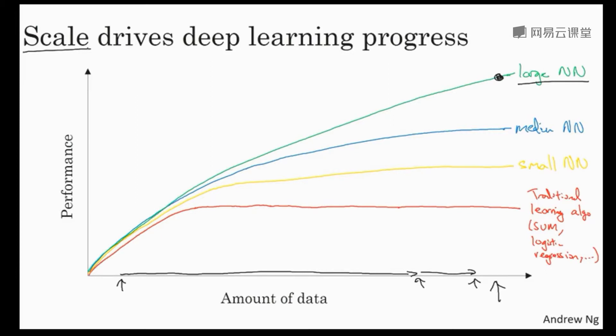So we often say that scale has been driving deep learning progress. And by scale, I mean both the size of the neural network, meaning a neural network with a lot of hidden units, a lot of parameters, a lot of connections, as well as scale of the data.